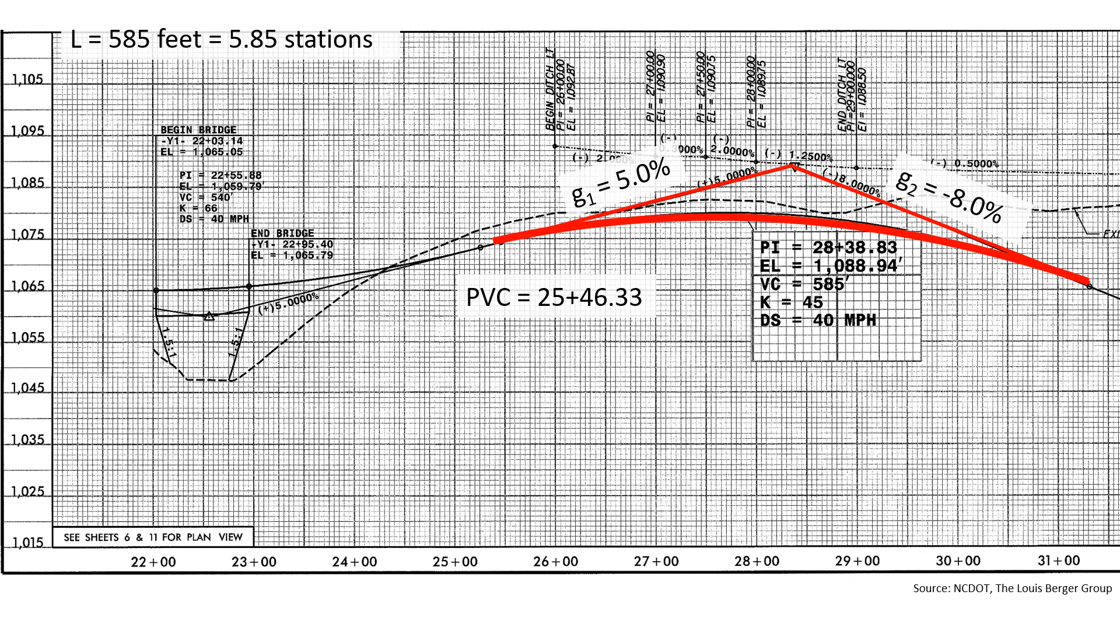We can also determine the elevation of the PVC, which is the elevation of the PVI minus G1 times half the length, so 1,088.94 minus 5 times 2.925 gives us a PVC elevation of 1,074.315.